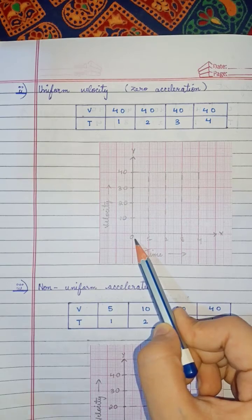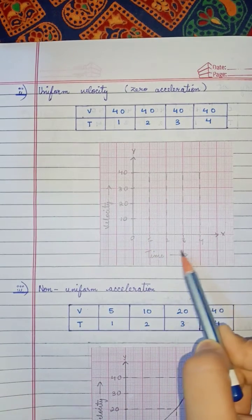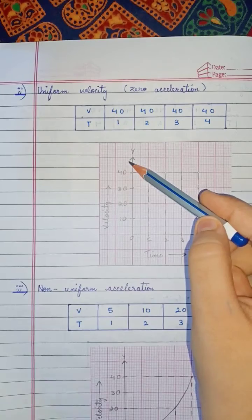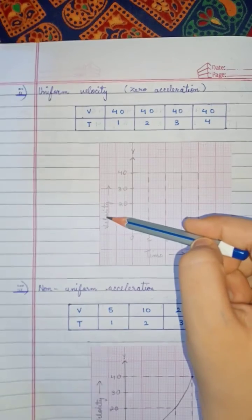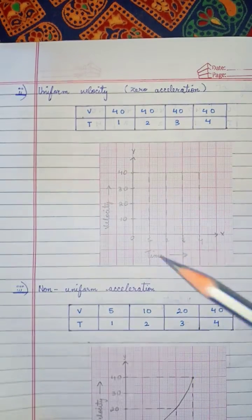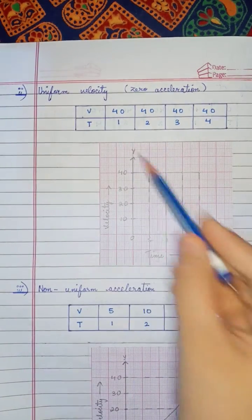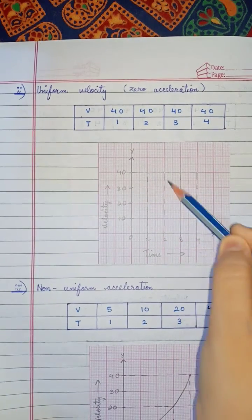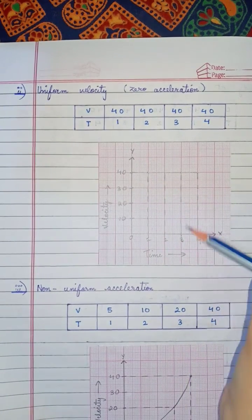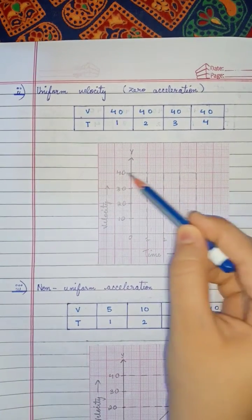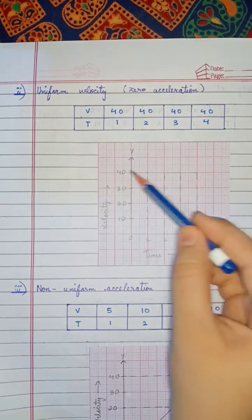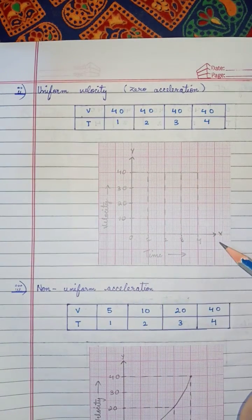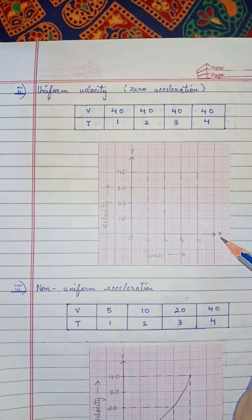Now how will you identify it in a graph? Let's plot a graph. This is the origin; this is the x-axis representing time in seconds, and this is the y-axis representing velocity in meters per second. In one second it is traveling 40 m/s, two seconds 40 m/s, three seconds 40 m/s, and four seconds 40 m/s.